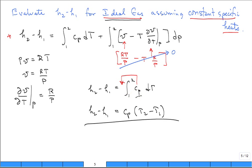For variable specific heats, it's just a function of temperature only. And if it's constant specific heats, then it's just C sub P dt.